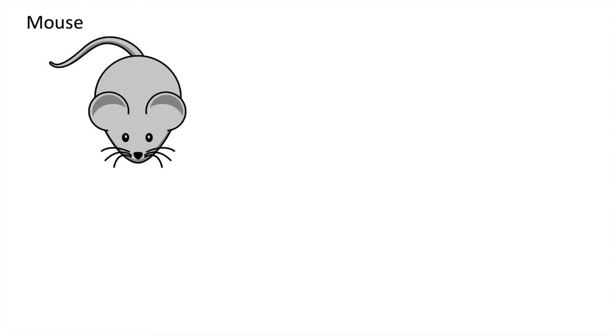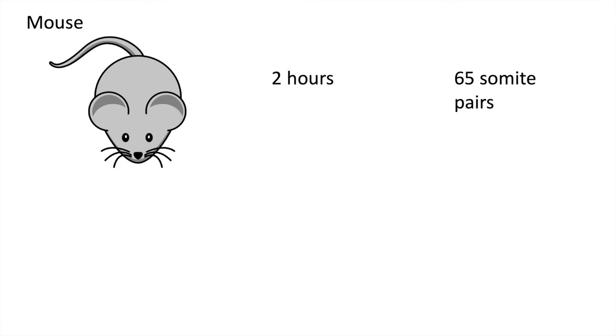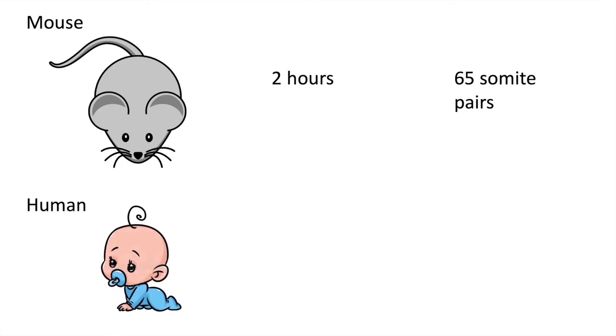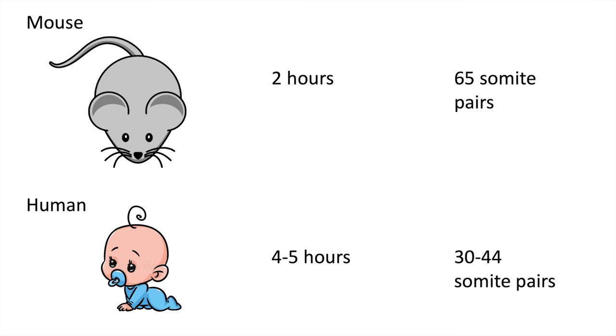To ensure that these spine deformations do not occur, there is a fixed number of somites for a given species, and that number varies across species. For example, mice form somites every two hours until 65 total pairs are formed. Humans, on the other hand, generate somites every four to five hours until 30 to 44 total pairs are formed.